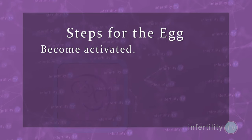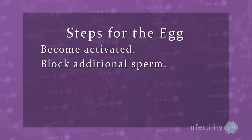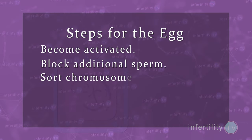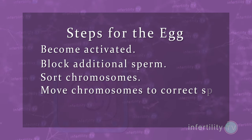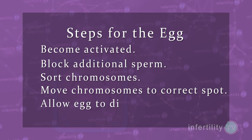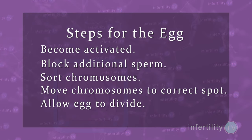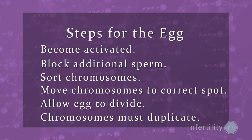However, the process of fertilization is not yet over. Once the sperm releases its contents into the egg, there are another several steps that have to occur. This is the point at which problems with the egg can block completion of the fertilization process. The egg must itself become activated, block additional sperm from entering, start sorting all of the chromosomes from both the egg and the sperm, and move the chromosomes to the correct spot.